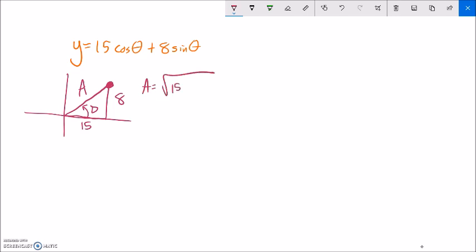A is going to be the square root of 15 squared plus 8 squared. So that's 225 plus 64, square root of 289, I get 17. So, so far I know that it's going to be 17 times the cosine of something minus some shift.